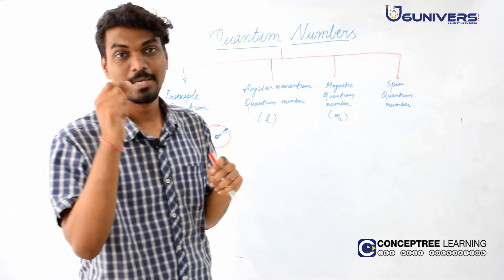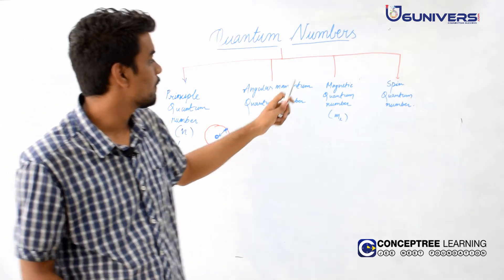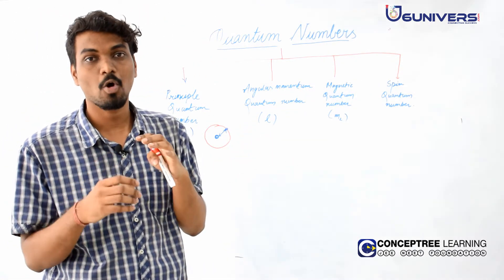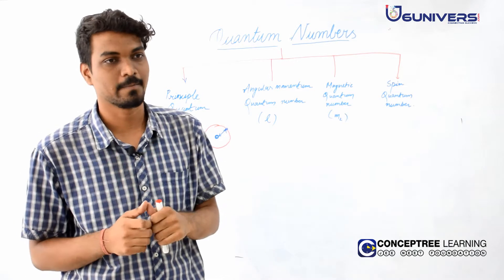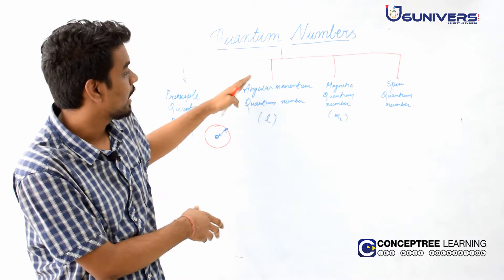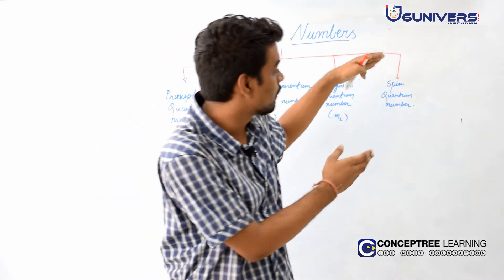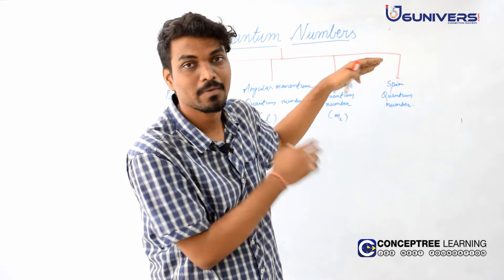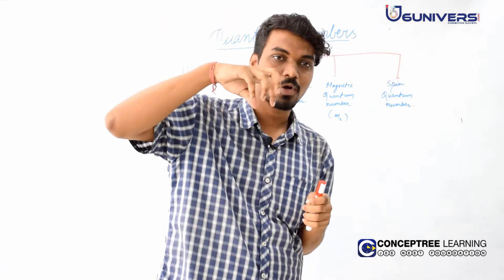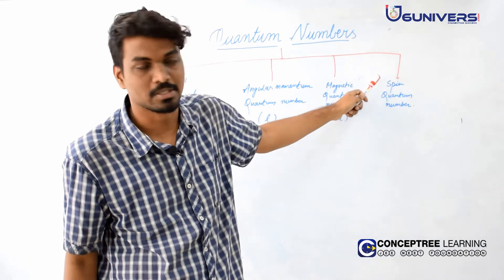The magnetic quantum number tells us how many orbitals there will be. So angular momentum quantum number gives the shape of the orbital, and the magnetic quantum number tells us how many orbitals there will be. The spin quantum number tells us what will be the spin of the electron — whether it is spinning anti-clockwise or clockwise.